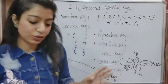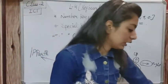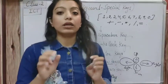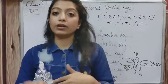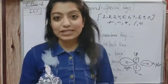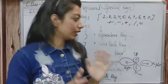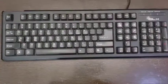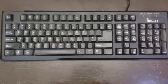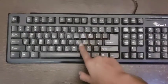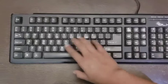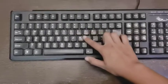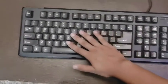Now let's see the keyboard visually. As you can see this keyboard has three alphabet key rows — there are a total of 26 alphabets given: this first row, the second row, and the third row. These are the alphabet keys.